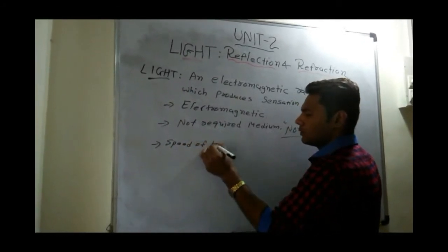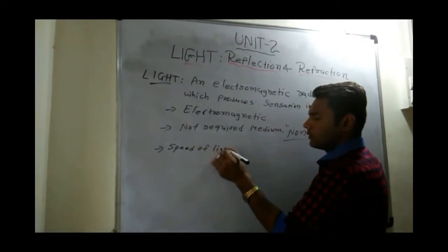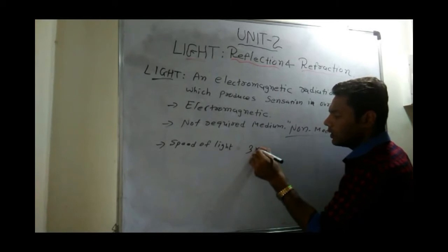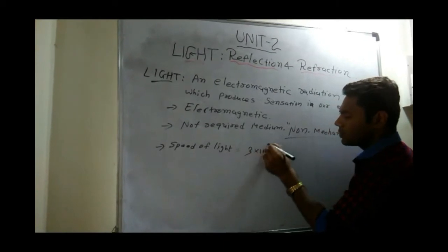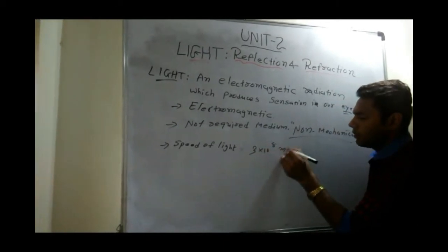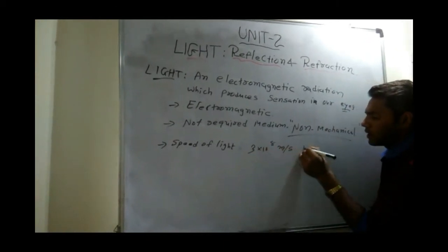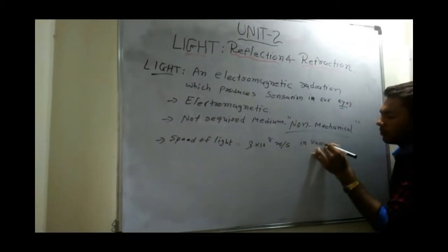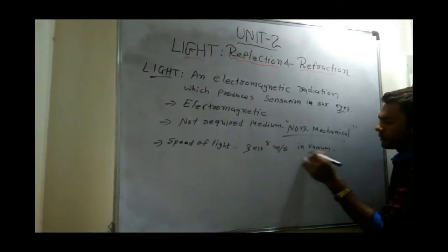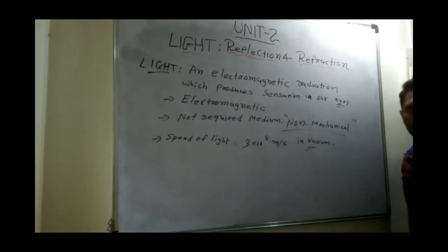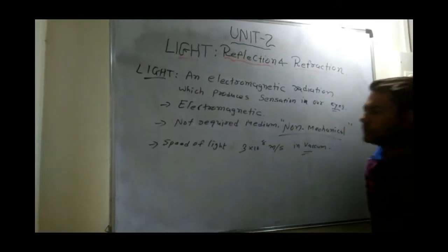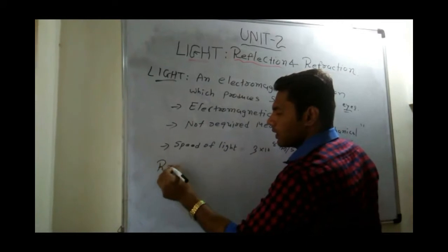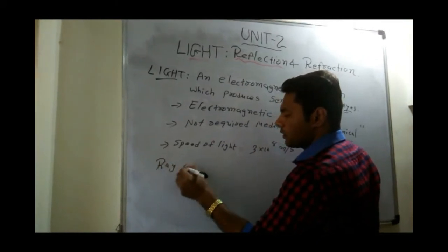The third thing is the speed of light. The speed of light in vacuum is 3 × 10⁸ meters per second. So there are three key points about light.